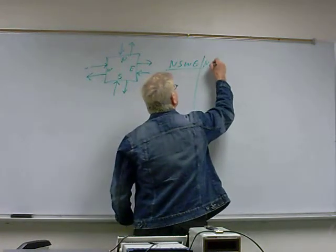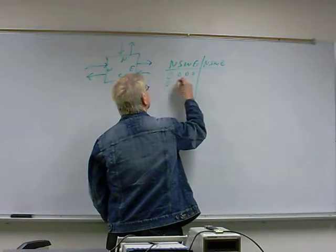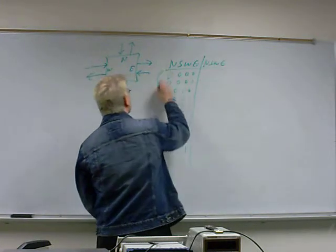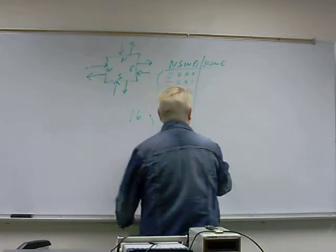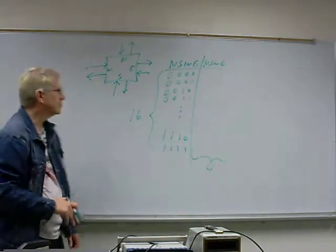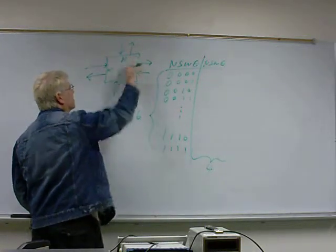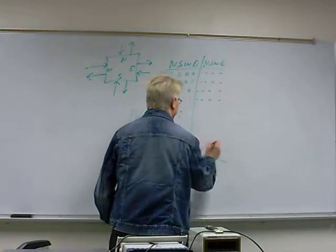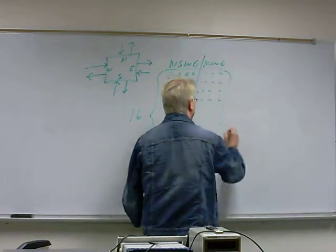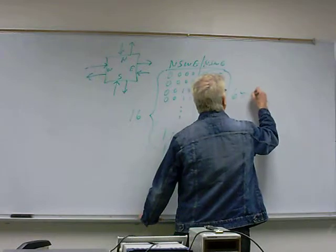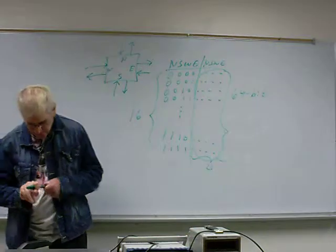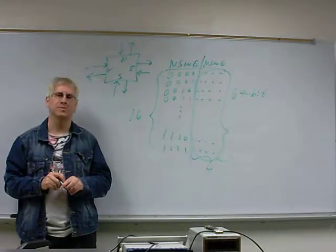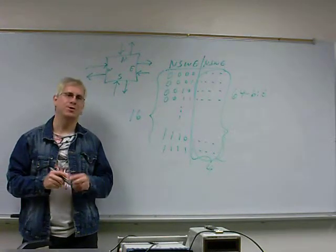With four inputs, our input combinations number 16. For each combination we have four output values, one for each direction going to the north, south, west, and east. So we have four bits in each of 16 columns — that makes this whole collection a 64-bit number, and that 64-bit number uniquely defines one cell and describes exactly how it maps inputs to outputs.